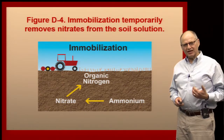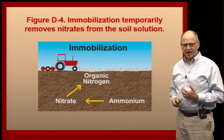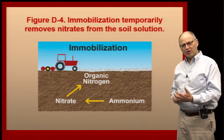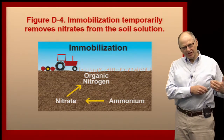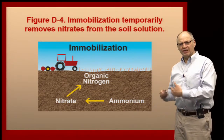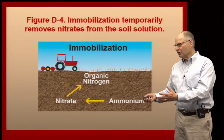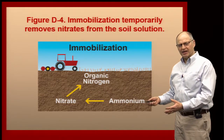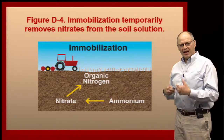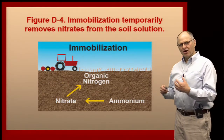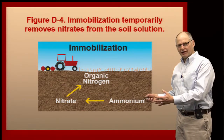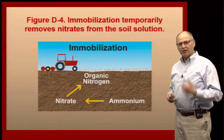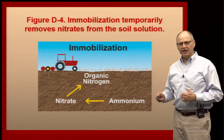Once nitrogen gets into nitrate form, that doesn't mean it's going to go right into the plants. Conditions can arise where it can leach, but here we're talking about immobilization, which is the opposite of mineralization. Mineralization moves organic material into the ammonia form; immobilization takes the nitrate and puts it back into the organic form. This happens when there are microbes in the soil with a lot of carbon — the microbes use nitrate as a food source to help them grow. This will happen when you have a lot of corn residue or wheat stubble and not much nitrogen. That nitrogen gets put into the organic matter, making nitrate levels very low in the soil, and your crop can turn yellow for a while. Eventually those microorganisms will die and release the nitrogen again, but for a while it's immobilized.